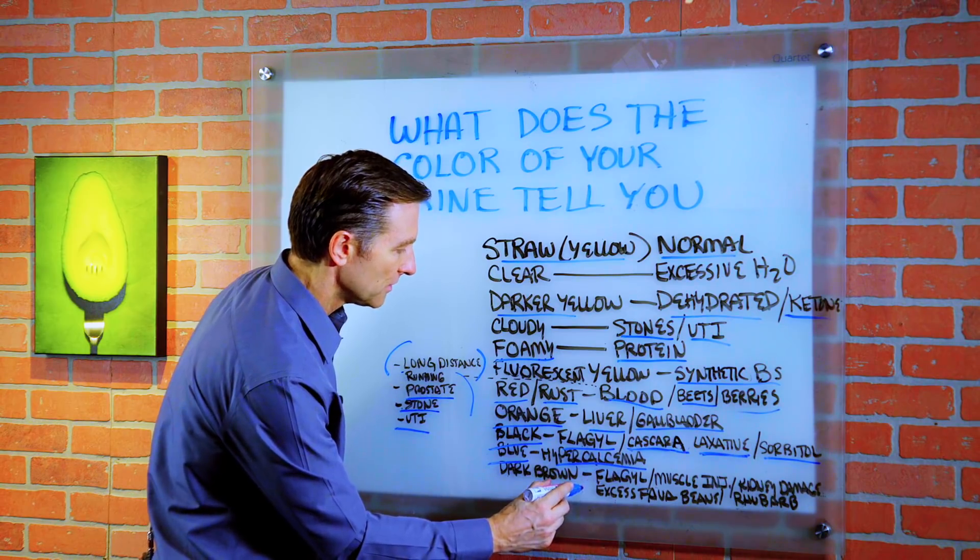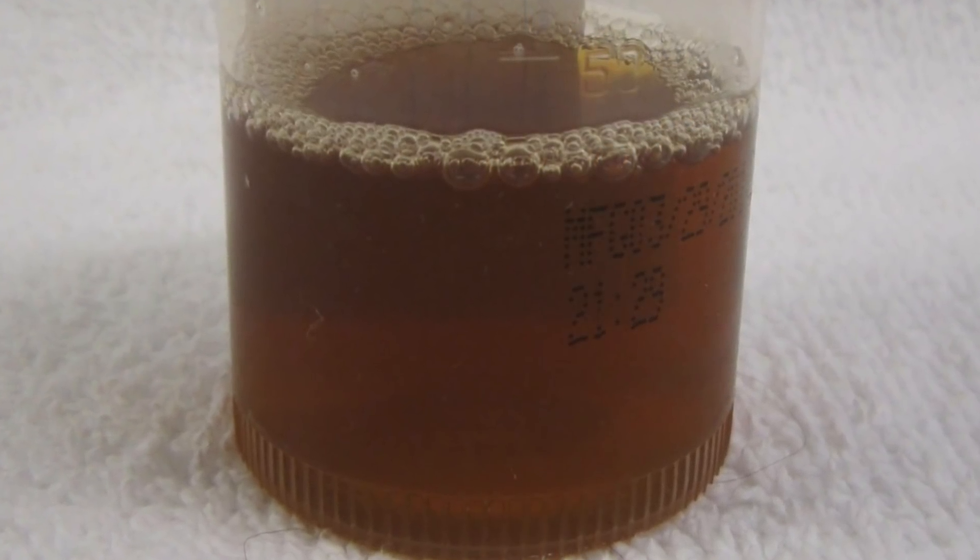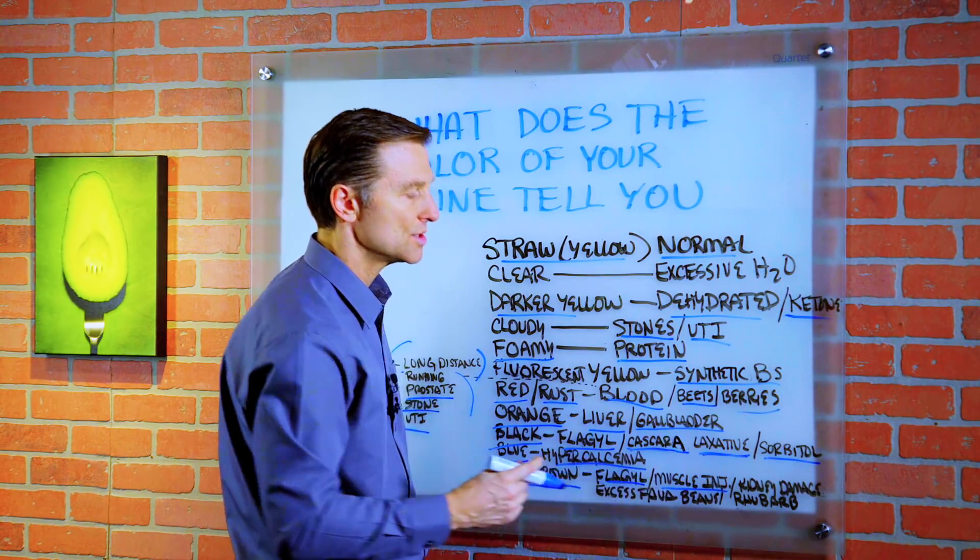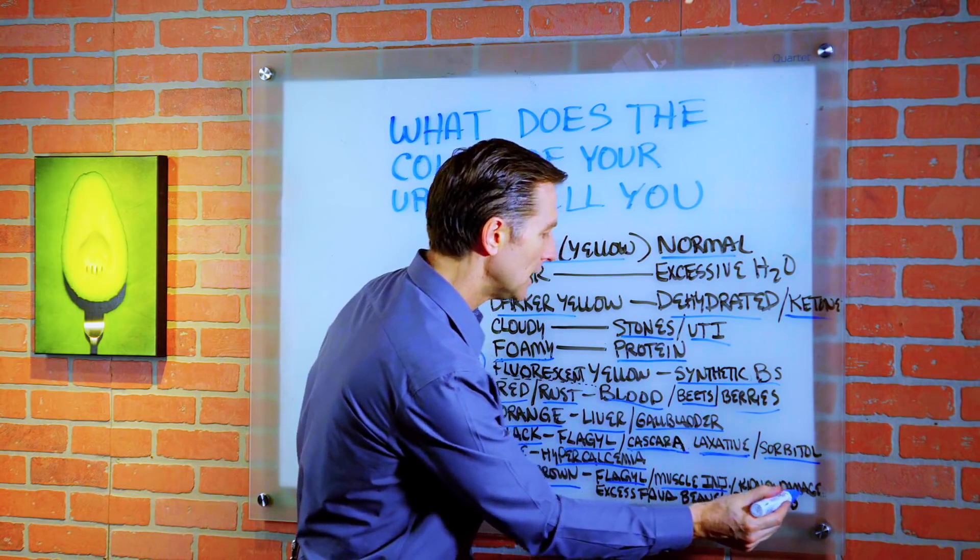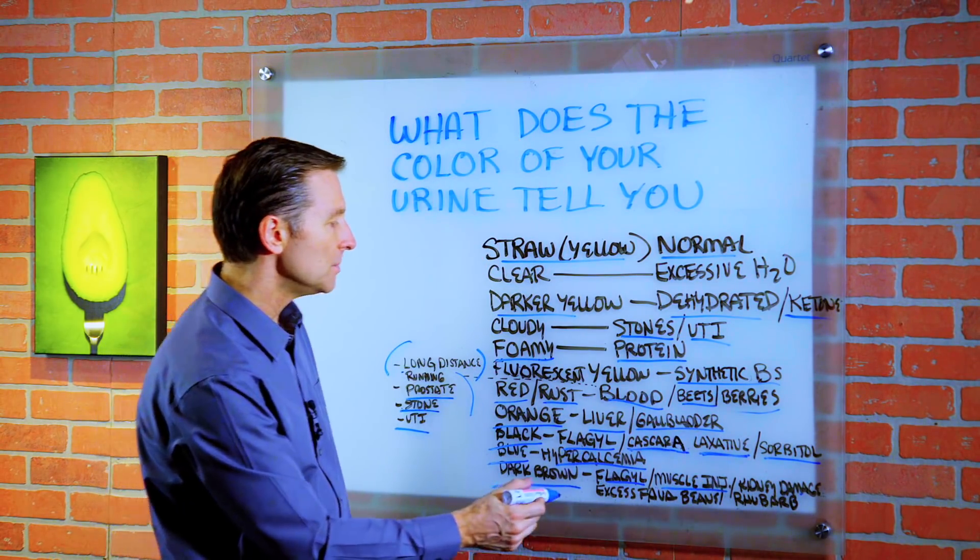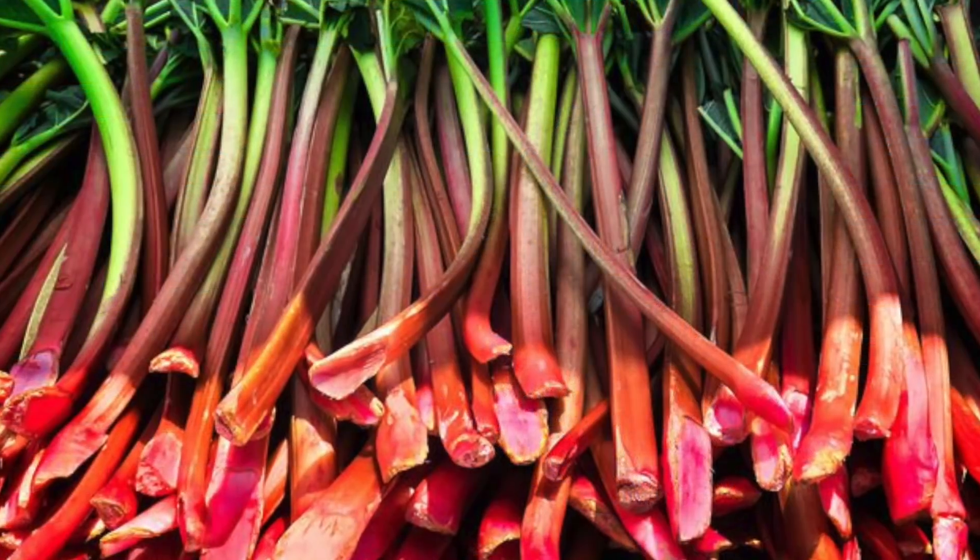If your urine is very, very dark brown, potentially it could be the Flagyl antibiotic. It could be muscle injury because you exercised excessively. It could be kidney damage. It could be excessive fava beans, or you consumed some rhubarb.